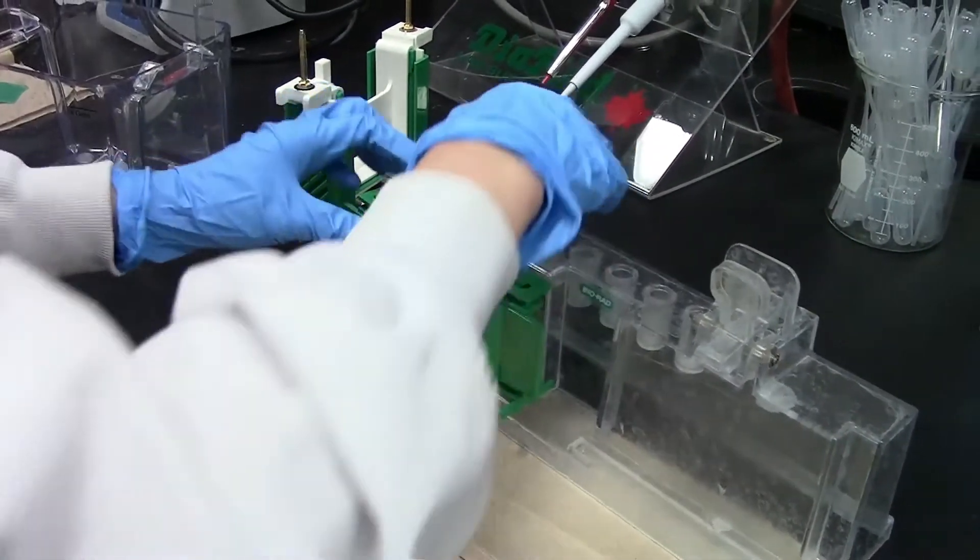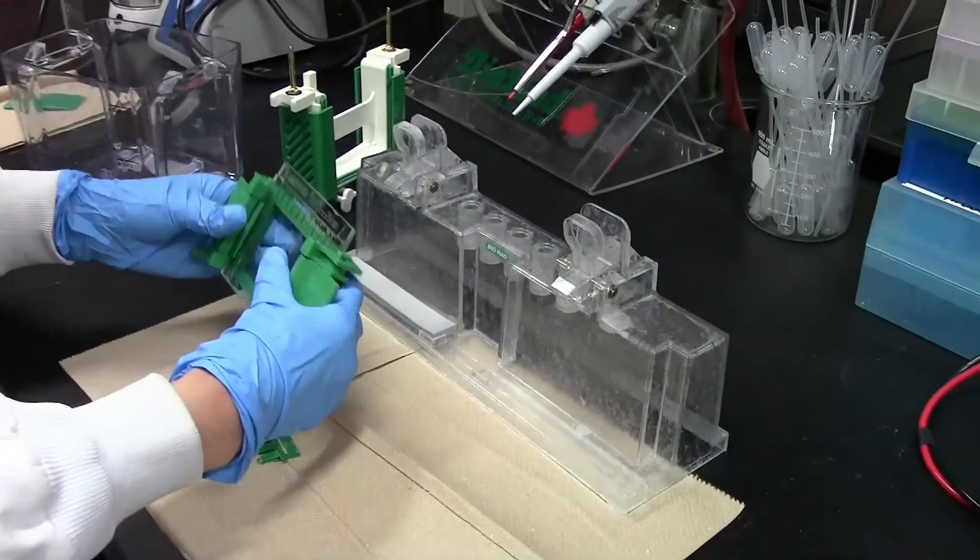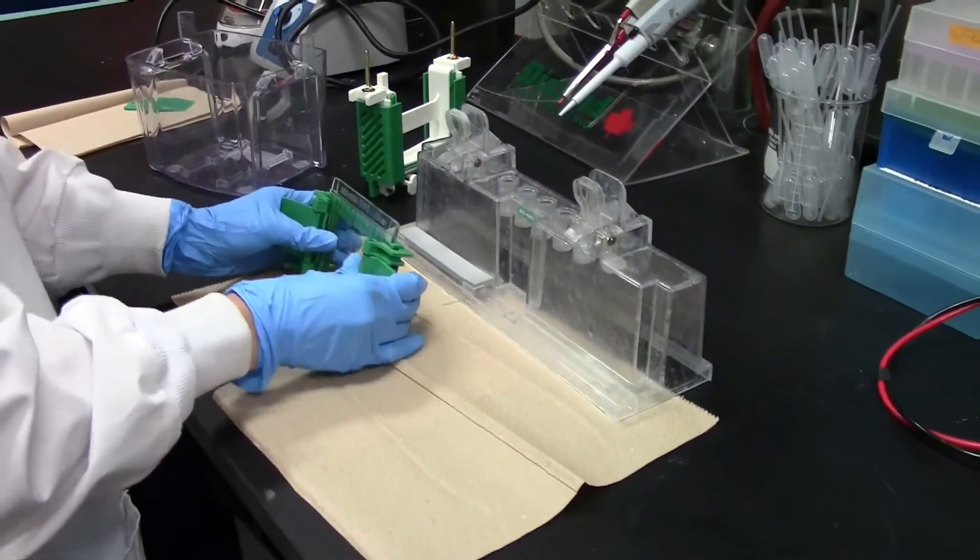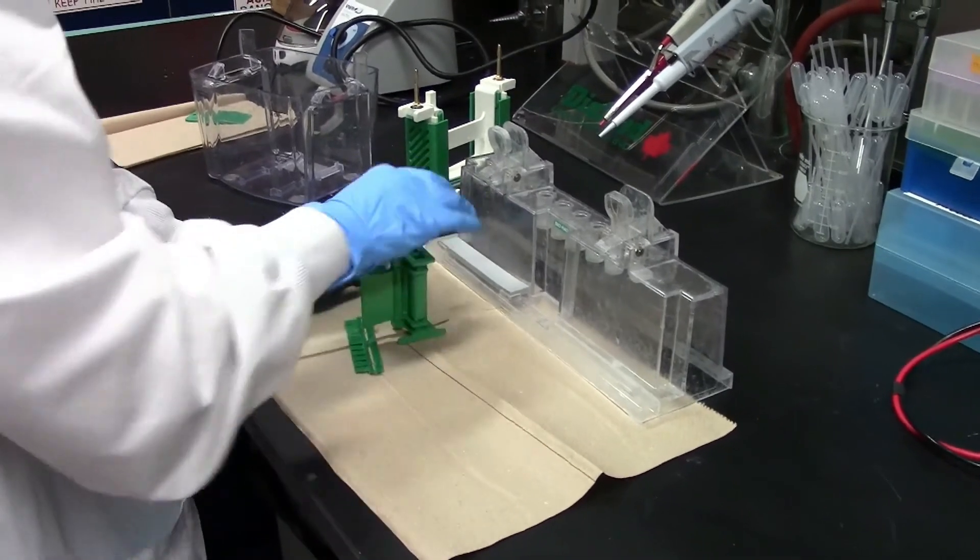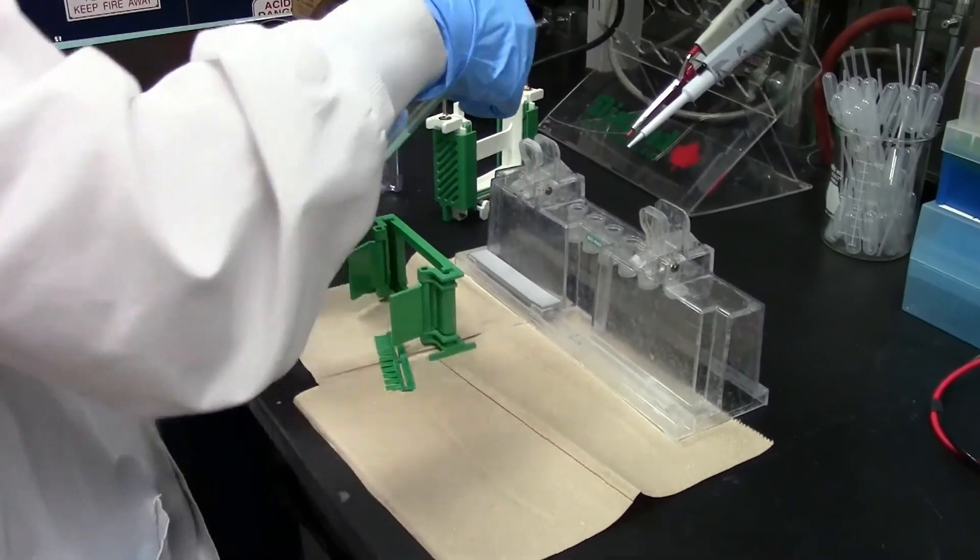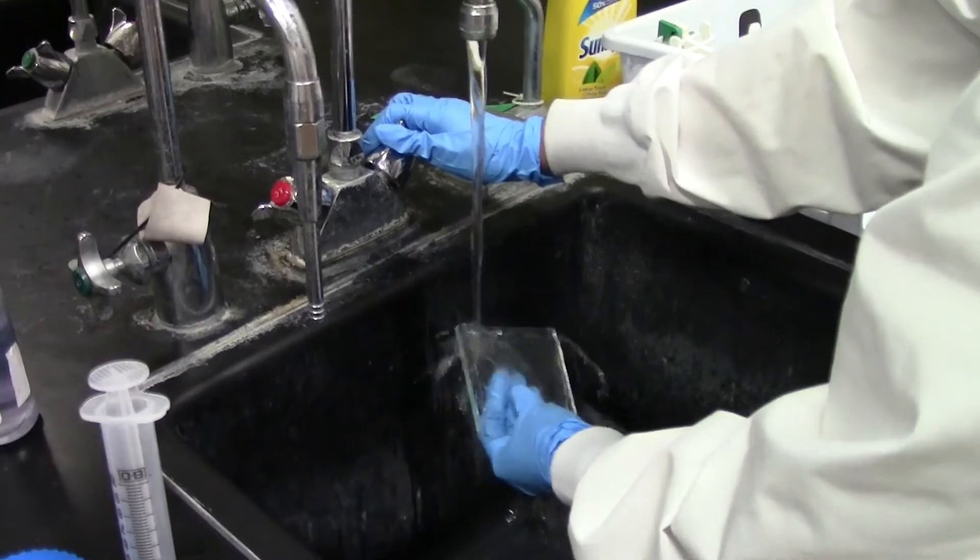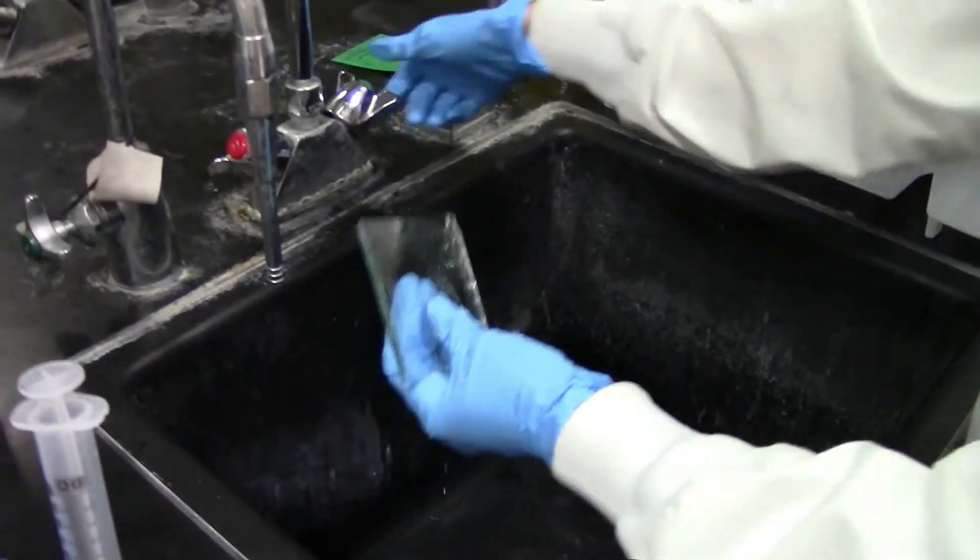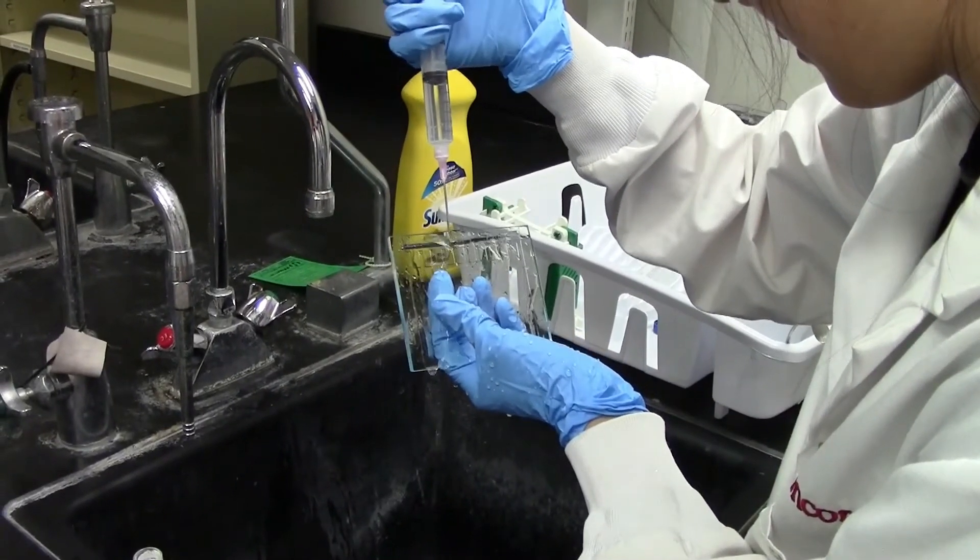After about 20 to 30 minutes, your gel should have polymerized. Gently remove the comb from the wells and remove the plates from the casting stand and casting frame. Once released from the apparatus, you should rinse the wells with water, followed by rinsing the wells with the same buffer that you will be using for gel electrophoresis.